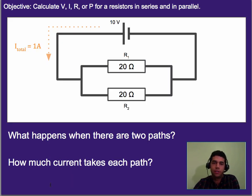Okay, so we've talked about current flowing through a circuit before, and before we only had one resistor. So what happens when you have two resistors and there's two different paths? How much current takes each path? That's going to be the goal we're going to try and answer in the first half of this lecture.